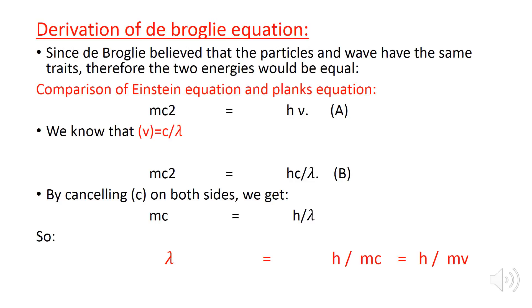Comparison of Einstein equation and Planck's equation. We know that Einstein equation is E equals mc squared, and Planck's equation is E equals h nu. By comparison of these two equations, equation A becomes mc squared equals h nu.